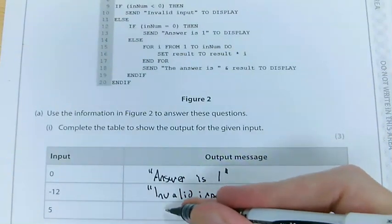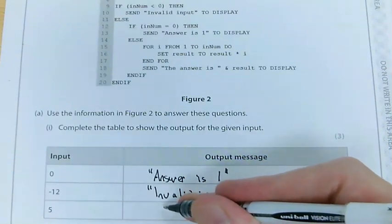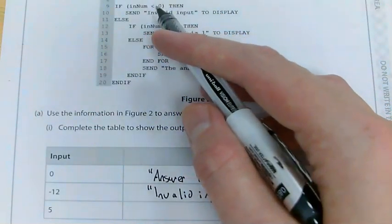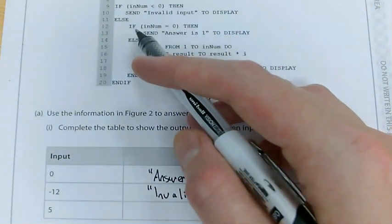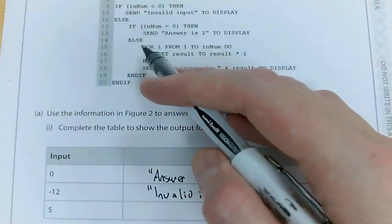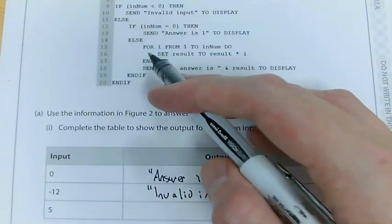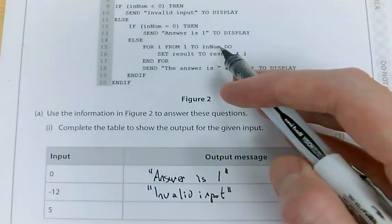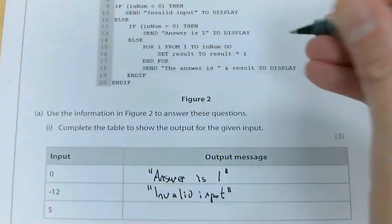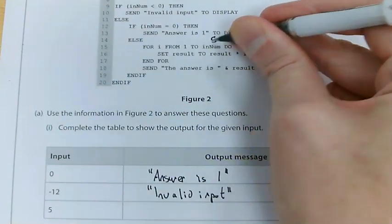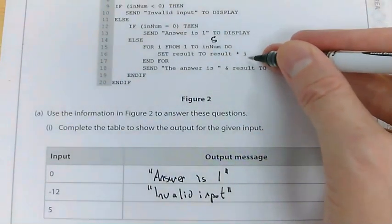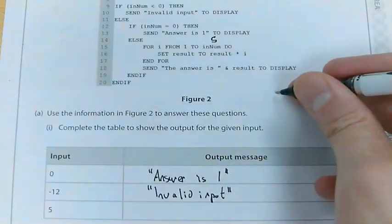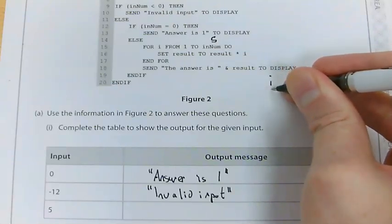Now, the next one is 5. So 5 comes into my algorithm. So receive 5. If inNum is less than 0, no. Else, if inNum equals 0, no. Else, nested if here, for i from 1 to inNum do. So now, for i from 1 to 5, which is inNum do, I'm going to loop 5 times. Set result to result times i. So what I'm going to do is just make myself a table there.